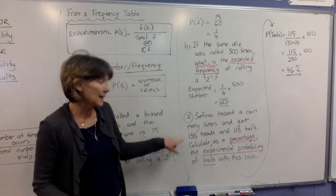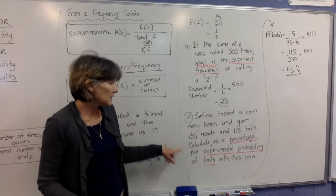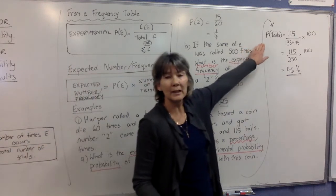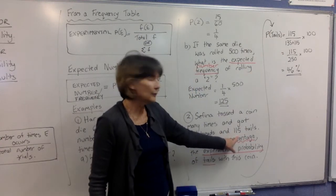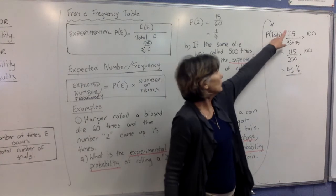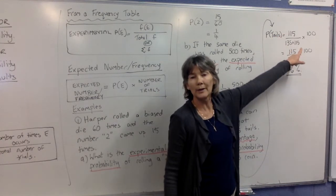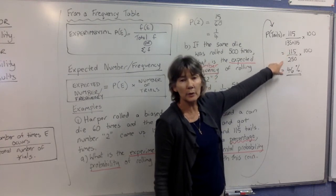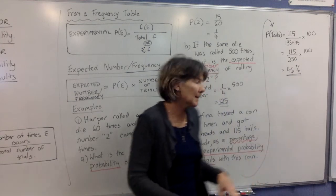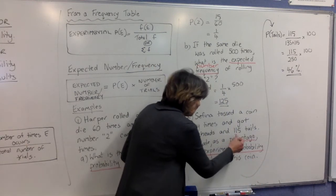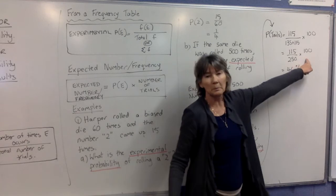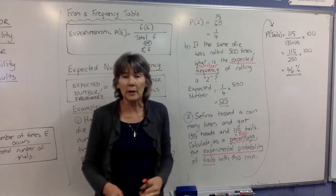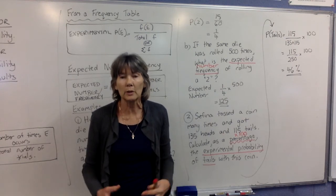They want us to calculate as a percentage, we'll get to that in a minute, the experimental probability of tails. So we're looking at the probability of tails. We got 115 tails out of the total number of coin tosses we did, which we said was 250 when we add these up. So 115 tails out of 250 tosses. Make it a percentage means times by 100. Work it out and your answer is 46%. So we're going to come back in the next video and do a longer question with a lot more parts to it.